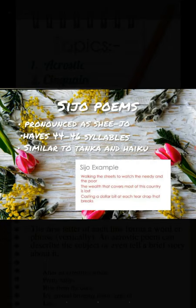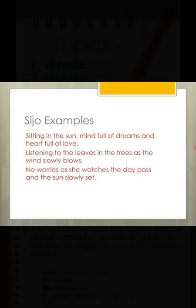The last one is sijo — a Korean verse form related to haiku and tanka, comprised of three lines for a total of 44 to 46 syllables. Each line contains a pause near the middle, though the break need not be metrical. Here is a sijo describing poverty: Walking the streets to watch the needy and the poor. The wealth that covers most of this country is lost. Casting a dollar bill at each teardrop that breaks. Example number 2: Sitting in the sun, mindful of dreams and heart full of love. Listening to the leaves in the trees as the wind slowly blows. No worries as she watches the day pass and the sun slowly set.